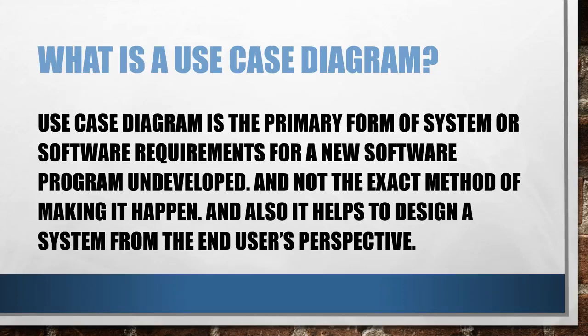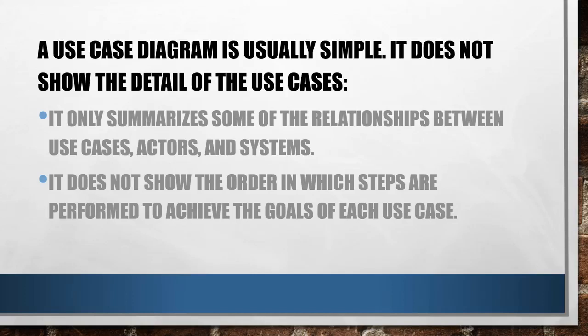Use case diagrams are usually very simple. They do not show all the details of the system or application; they only summarize the relationships between use cases, actors, and the whole system. They also do not show the order of steps or processes — they just show the relationships between all use cases.